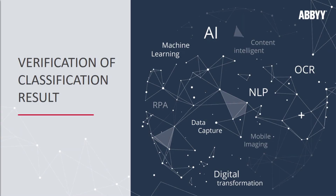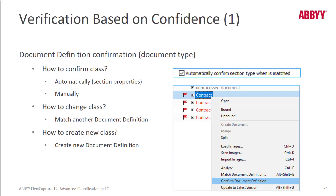Verification of Classification Results. When a verification operator needs to confirm classification results, this is a process to confirm that the correct document definition was applied.